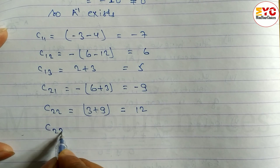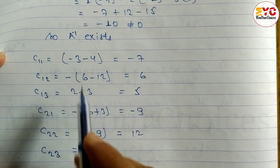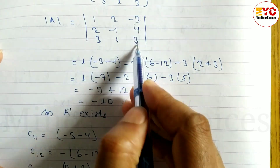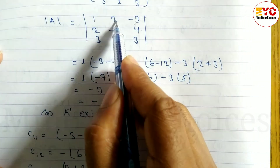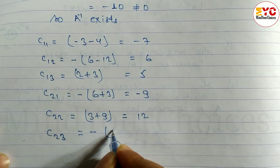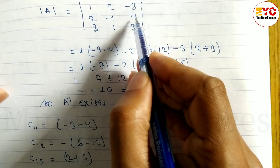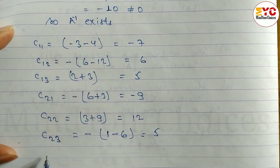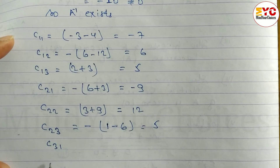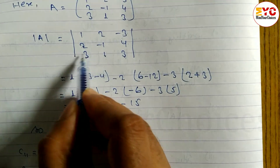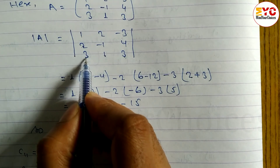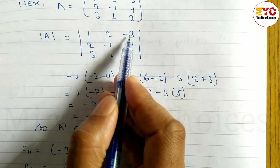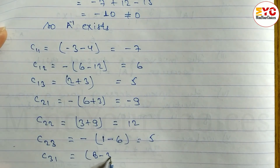Cofactor C23 (negative sign): minor gives 1×1 minus 3×2 = 1 minus 6 = minus 5, so C23 = minus 5. Cofactor C31: element is 3. Minor gives 2×4 minus (minus 1)×3 = 8 minus 3 = 5, so C31 = 5.